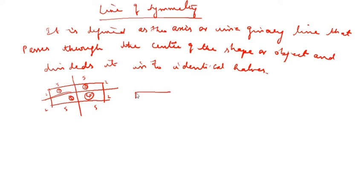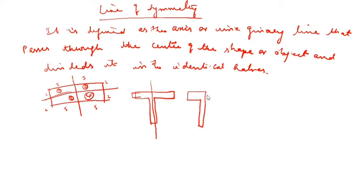Take the shape T. You have to half this side. This portion and this portion should be equal. The T should be halved — this is one portion, this is another portion. It should be the same — similar only. This is called identical halves. This is one line of symmetry, only one imaginary line.